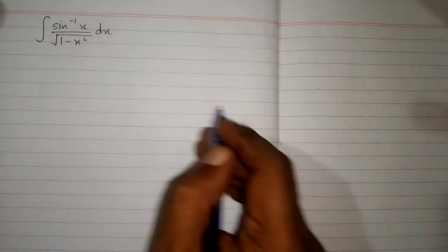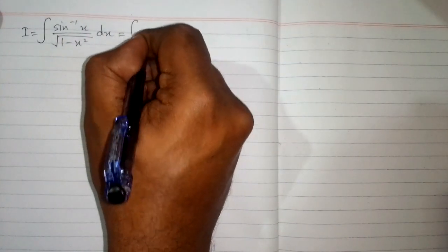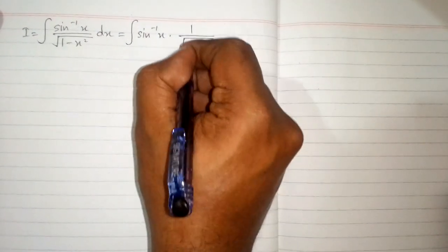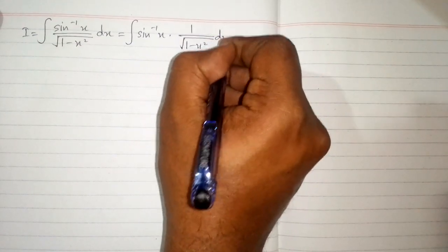In this video we will find the integral of inverse sine of x upon square root of 1 minus x square. Suppose this integral is I, and this can be written as integral of inverse sine of x multiplied by 1 upon square root of 1 minus x square dx.